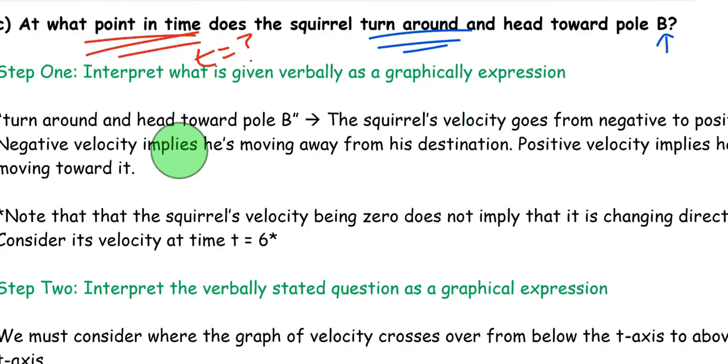So with all that being said, let's go through the formal steps to figure this problem out. Remember, interpret what is given verbally as a graphical expression. Turn around and head towards pole B. So when does the squirrel actually do that? In fact, at what point of time does the squirrel turn around and head towards pole B?